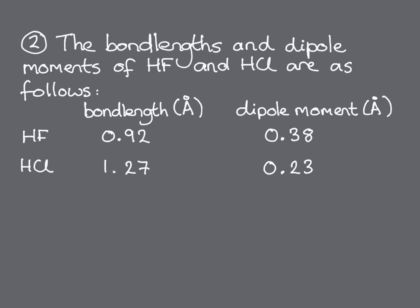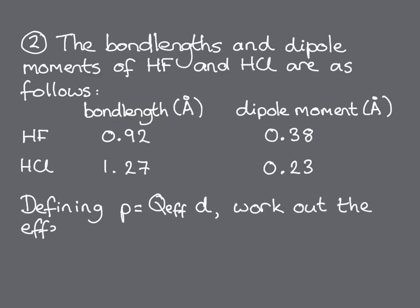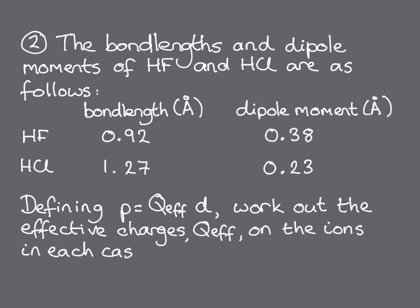In the second exercise for this module, you'll use the formula P is equal to Q times D to calculate the effective charges on the ions in two familiar diatomic molecules, hydrogen fluoride and hydrogen chloride, using the data given here. Think about whether your answers are consistent with your understanding of ionicity and electronegativity and the relative positions of fluorine and chlorine in the periodic table.